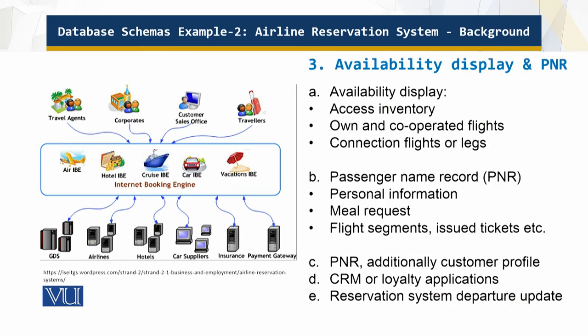Users access an airline's inventory through an availability display — this is the client interface. It contains all the offered flights for a particular city pair with available seats and different booking classes. There are also cooperating flights, connecting flights, or legs. A leg refers to when a city pair is not directly served by the airline.